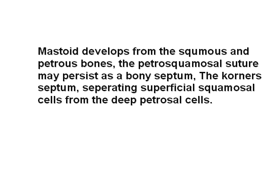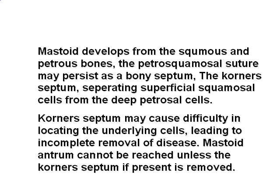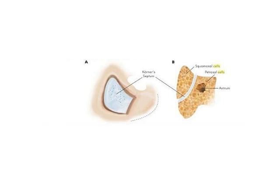The mastoid develops from the squamous and petrous parts of the temporal bone. The petrosquamous suture may persist as a bony septum called the corner septum, separating the superficial squamous cells from the deep petrous cells. This may cause difficulty in locating underlying cells, leading to incomplete removal of disease. The mastoid antrum cannot be reached unless the corner septum, if present, is removed.